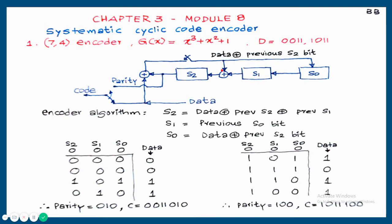Once the block diagram is completed, the feedback bit is always the XOR of the data bit and the previously stored S2 bit. That is written as: data plus previous S2 bit. Now the algorithm can be written: the new S2 bit is the XOR of (data plus previous S2) and previous S1, so S2 = data + previous S2 + previous S1.